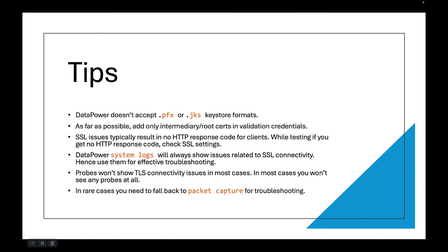A couple of tips: DataPower doesn't accept PFX or JKS keystore formats, so there's no use spending time trying to configure DataPower with those. If you have a PFX or JKS file, export the certificates and private keys and upload them into the CERT or shared CERT folder in DataPower. As far as possible, add only intermediary or root certificates in the validation credential. While it is certainly possible to add leaf certificates in the validation credential, I would suggest you do not — whenever a leaf certificate gets updated, you will have to update it in DataPower, creating a dependency. But there is no technical constraint against it; it will work.